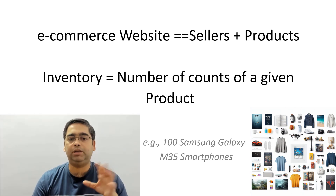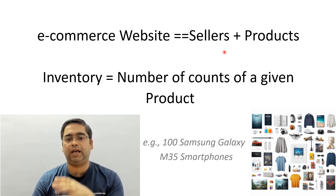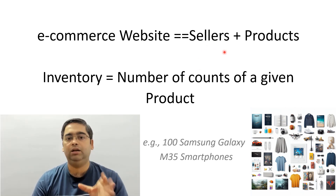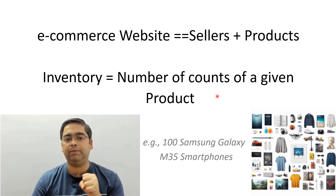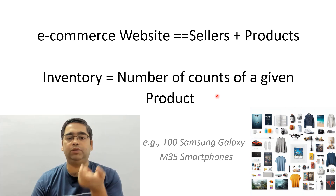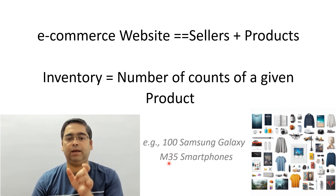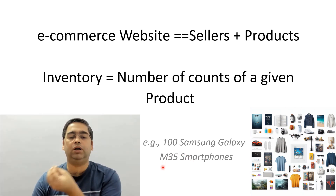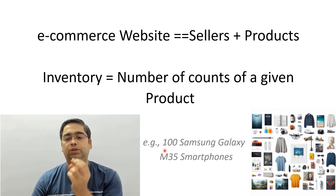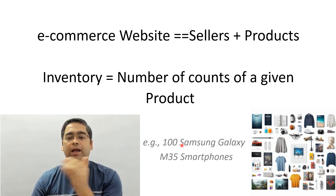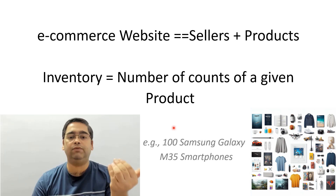On any e-commerce website there are multiple sellers — hundreds or thousands — and those sellers sell multiple products, potentially tens or hundreds of products. Inventory management basically deals with the count of a particular product in a seller's warehouse. For example, a seller may keep 100 Samsung Galaxy M35 smartphones. When three customers order a phone, three phones are shipped and the count becomes 97. Managing this count is what we are going to discuss in the inventory management system.